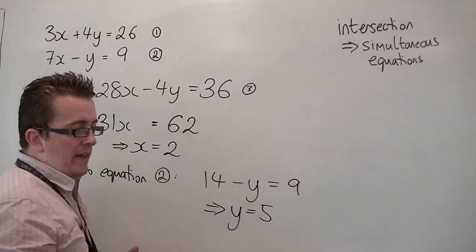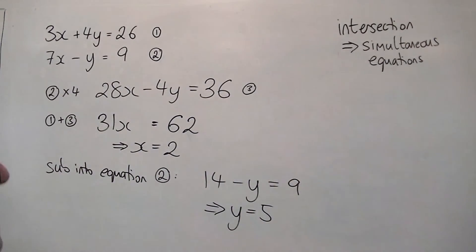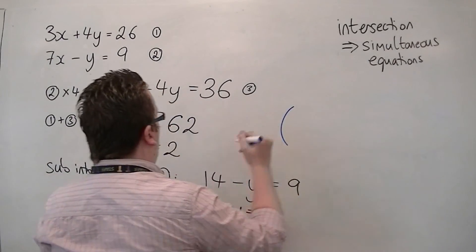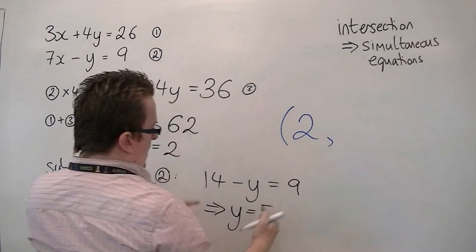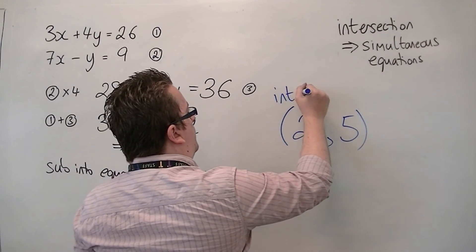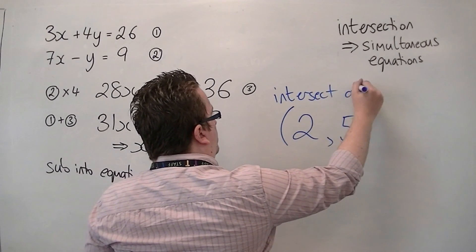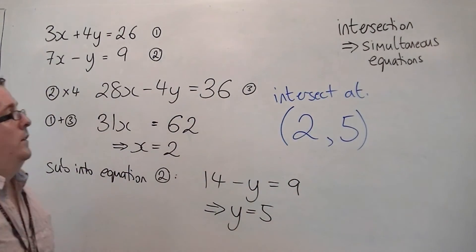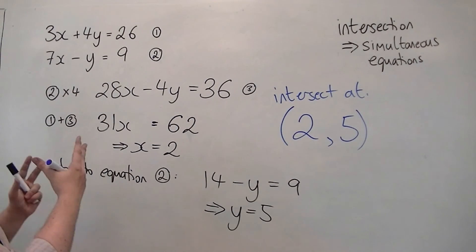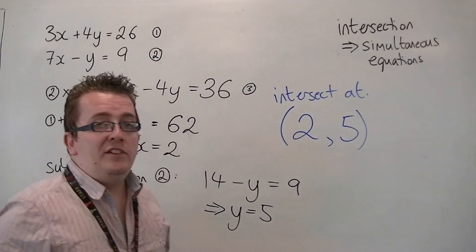So that therefore means that the two equations intersect, or the two lines intersect, at the coordinates x being 2 and y being 5. So that is how you can use the elimination method to find where two lines intersect.